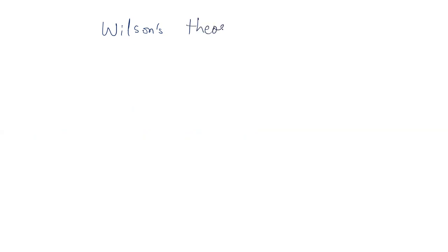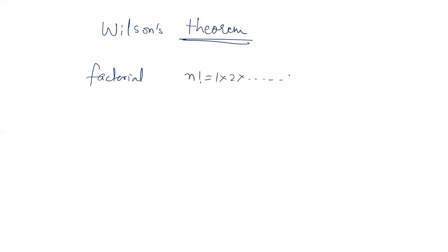Now let's see something about Wilson's theorem. In case of factorial, this is the theorem which is applicable. First, let us understand about the factorial. Factorial of a number is the product of the numbers from 1 to n. So 5 factorial is 1 × 2 × 3 × 4 × 5.